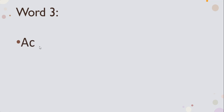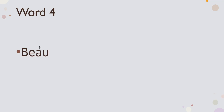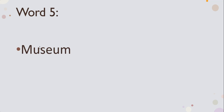Word number three: actors — adakar. Word number four: beautiful — khubsurat. Word number five: museum — ajayib ghar. Take a moment to review all five words before we begin the spelling test.